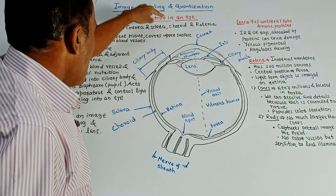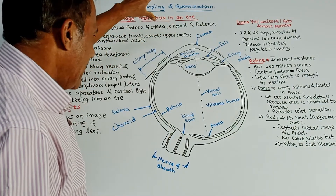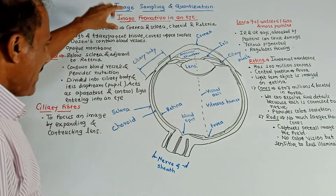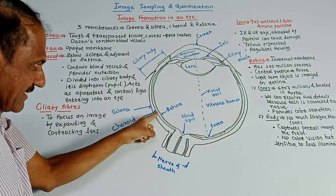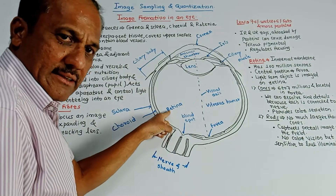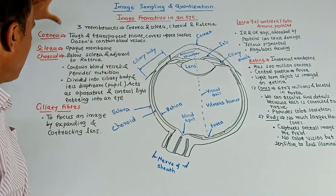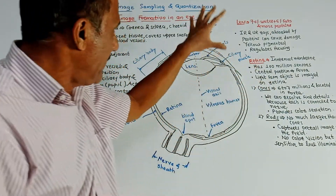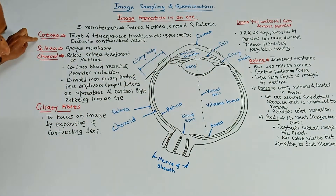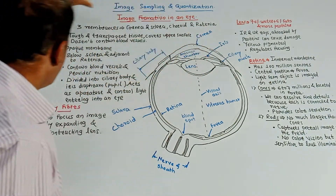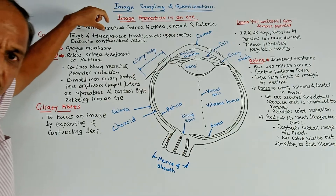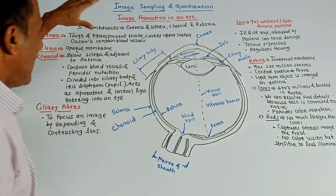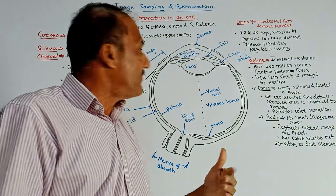Then choroid and retina. Retina is the most important part. So these are the three membranes. Now I have written some important points related to each membrane.